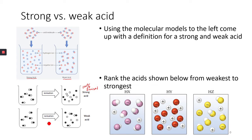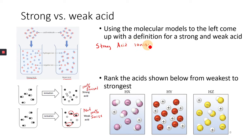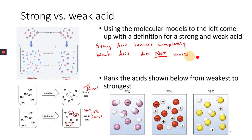This diagram over here shows that there are still some compounds that did not ionize — so not 100% ionized. Remember, ionize means when a substance forms ions. So using the models on the left, a strong acid ionizes completely, and a weak acid does not ionize completely.